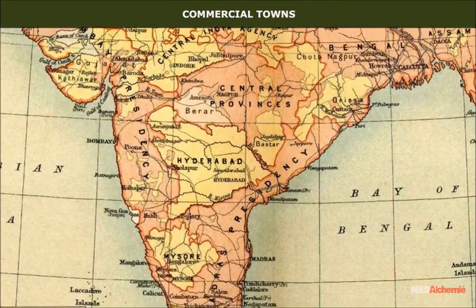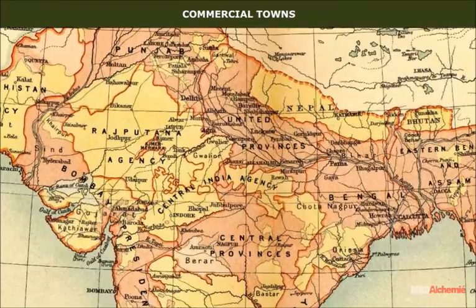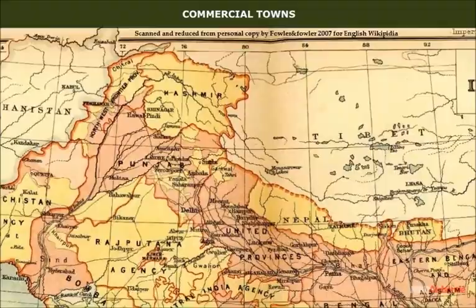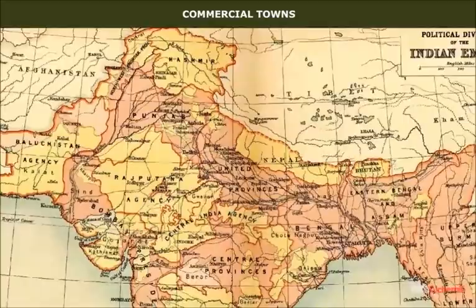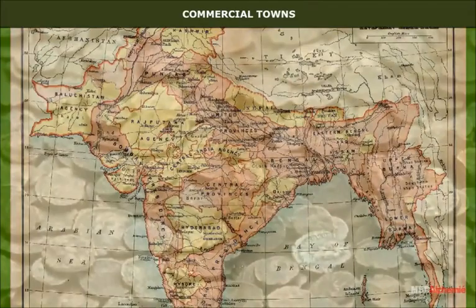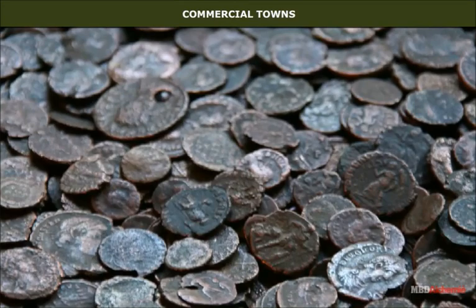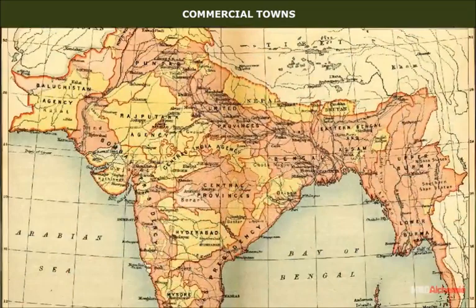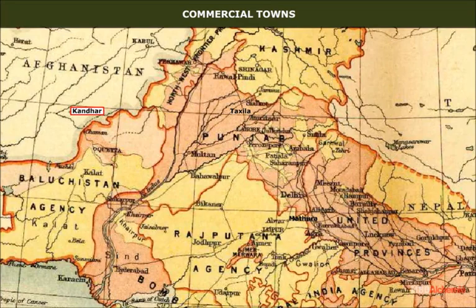Many trading centers flourished owing to thriving exports and imports. Northern India was involved in all sorts of trading activities from tourism and pilgrimage to internal commerce. South India, with many natural ports, played a crucial role in exports and imports. Roman coins discovered at various sites are proof of the valuable trade that was carried out at these port towns. Some of the important trading towns were Taksila, Mathura, Gandhara, Kandahar and Multan.